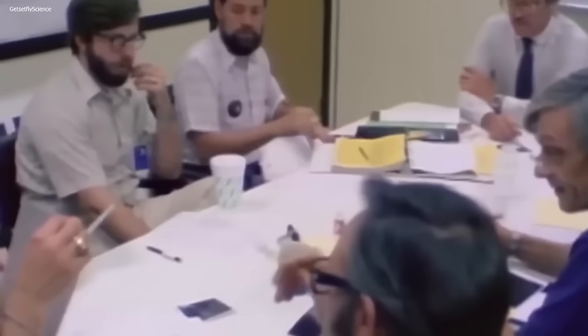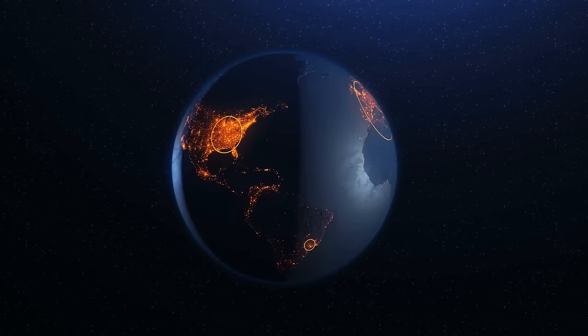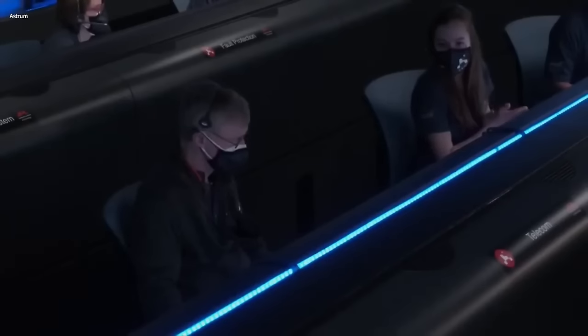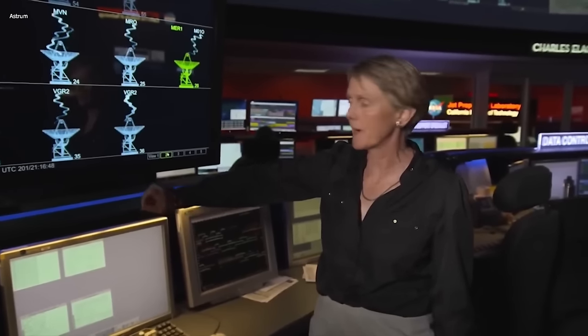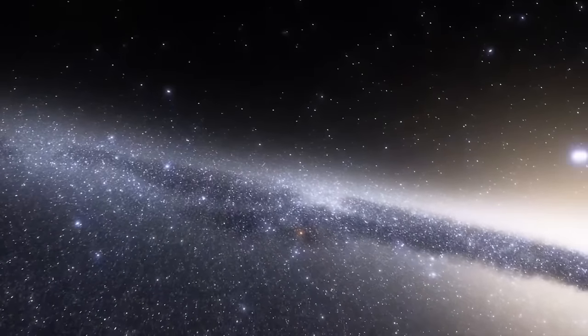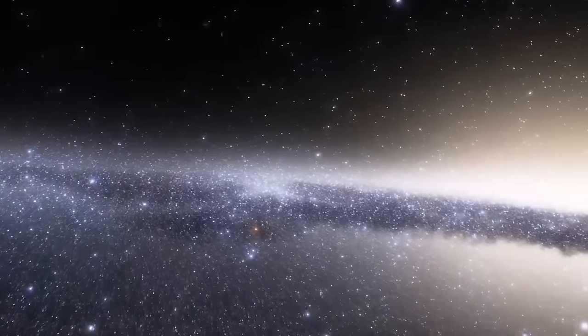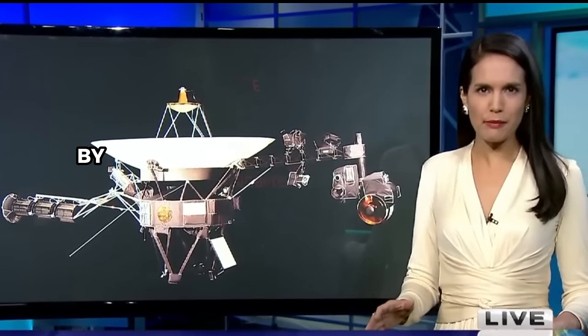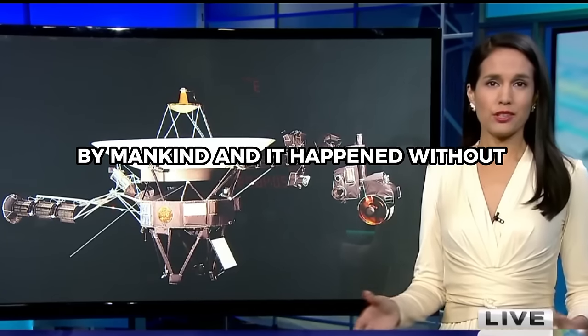Adding to the confusion was the concern that these objects might pose a threat to Earth. However, in the ensuing weeks, scientists determined that this was not the case, putting those worries to rest. Interestingly, Voyager 1 captured something way more shocking just as it reached interstellar space. Now, it is one of the most significant achievements by mankind, and it happened without anyone even knowing. NASA says that Voyager 1 has become the first man-made object to reach interstellar space, the cold, dark region between stars, far from the influence of our sun.